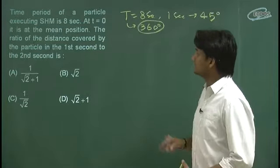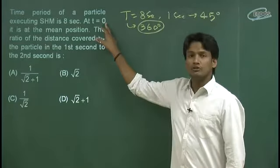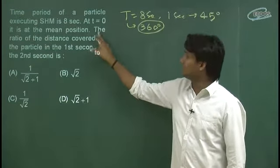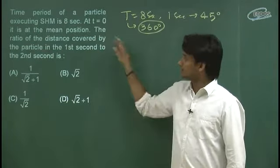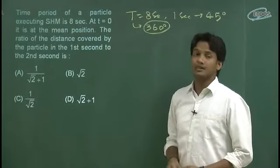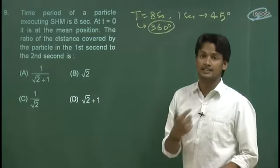Ab aap dekho, is ne poucha hai - at t is equal to 0, particle is at mean position. The ratio of distance covered by the particle in 1st second to 2nd second.